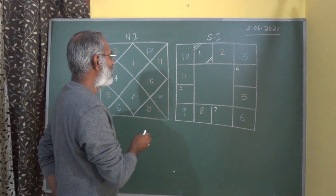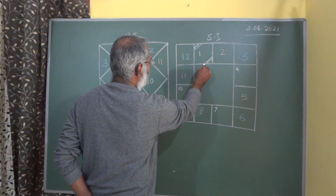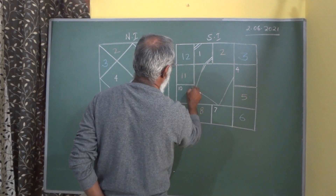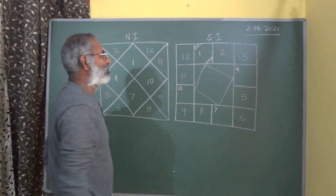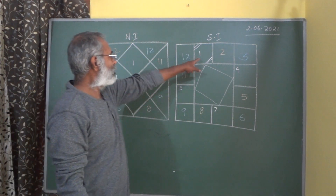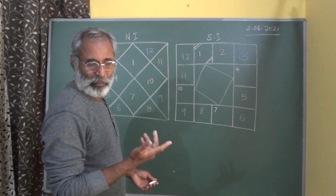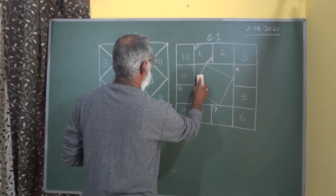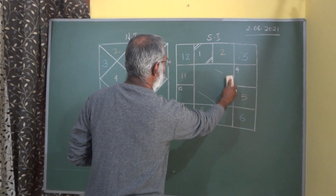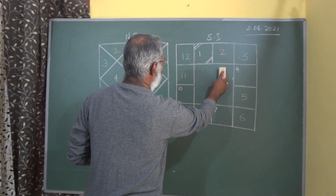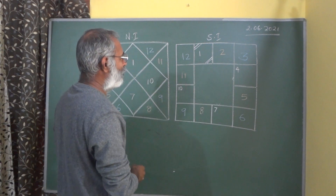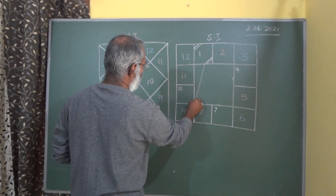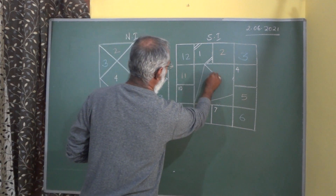The 1st, the 4th, the 7th and the 10th houses are called as the Kendras. I can draw a square here to illustrate — this is the Kendra. The 1st, the 4th, the 7th and the 10th are called the Kendras. The 5th and the 9th — along with the 1st — the 1st, the 5th and the 9th is known as the Trikona. You get a triangle here.